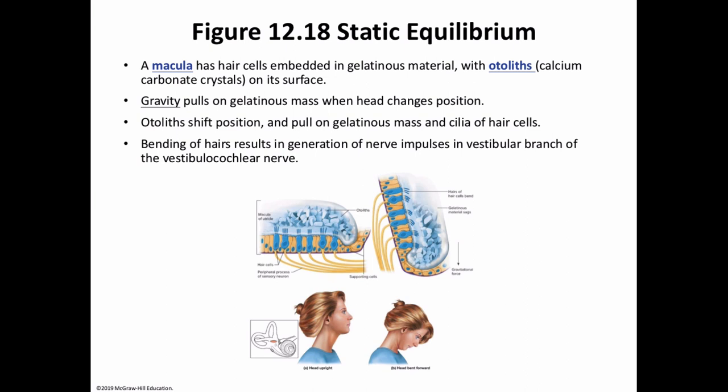Next, we'll get to sense and balance. Those maculae also participate in the sense of dynamic equilibrium. When your head or body is thrust forward or backward abruptly, that gelatinous mass with the macula lags behind, and the hair cells are then stimulated. This is how the macula aids the brain in detecting movements, such as you falling or just maintaining your posture as you walk.